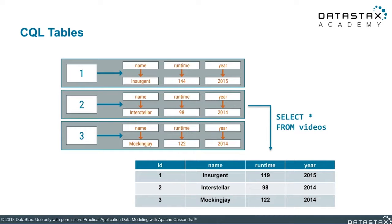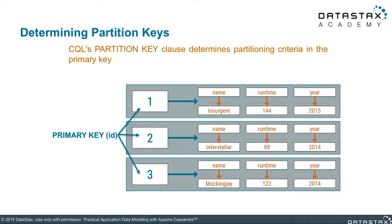Determining the partition key is a critical step, and knowing where to find it matters. In this diagram, we have a primary key designation of ID — just one item. The partition key is always the first value in the primary key. Every other value is considered a clustering column, which is covered in a different module. We're going to focus on that partition key, which gives us really interesting information about where data is in the cluster.